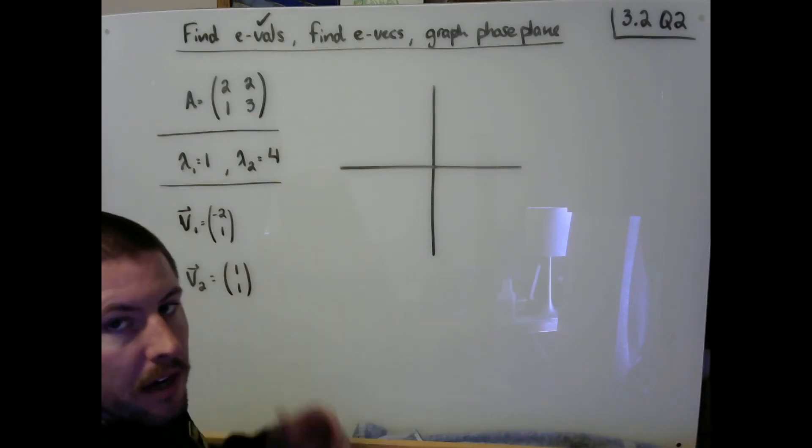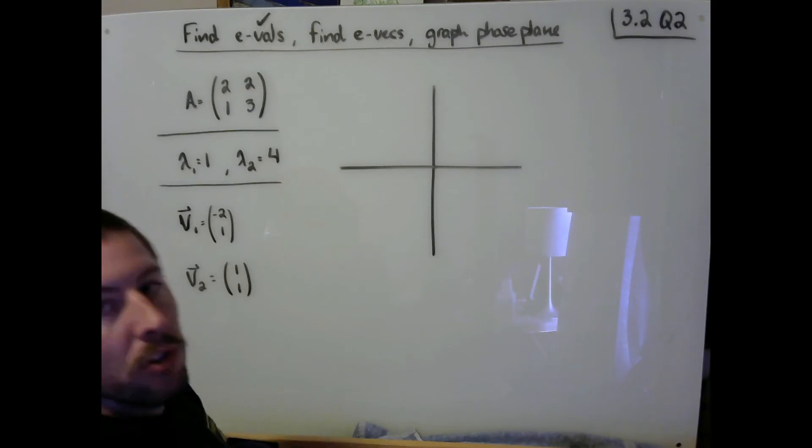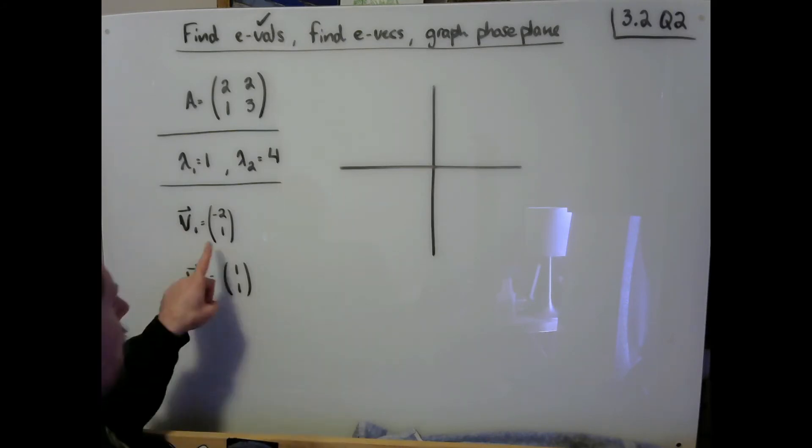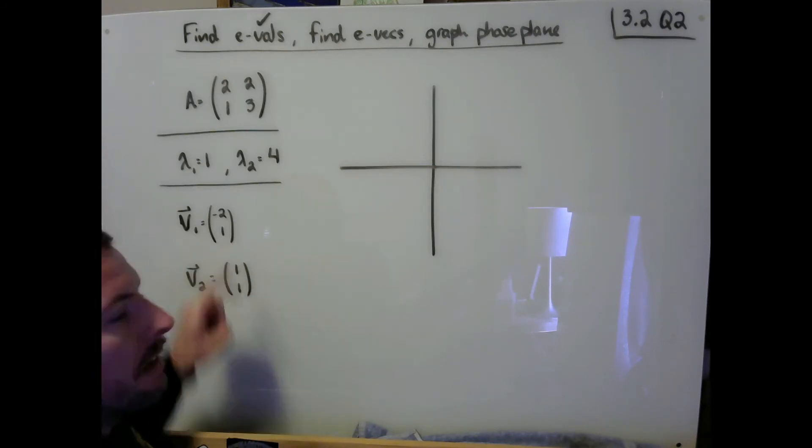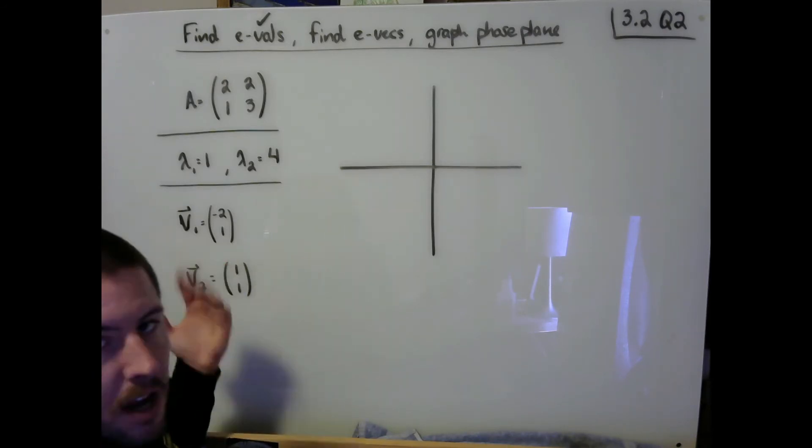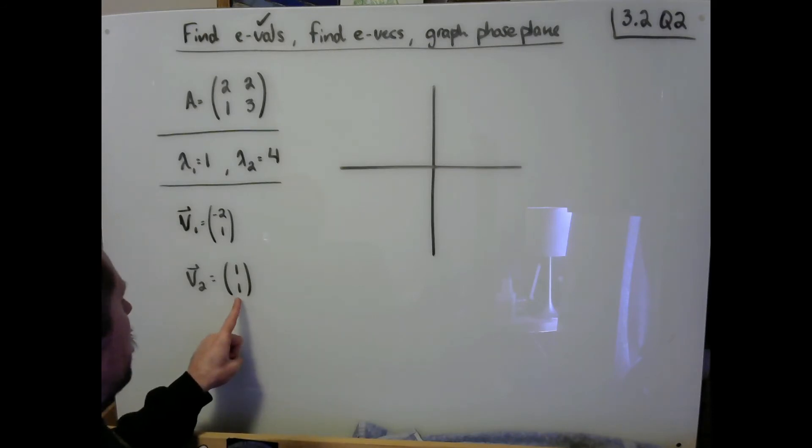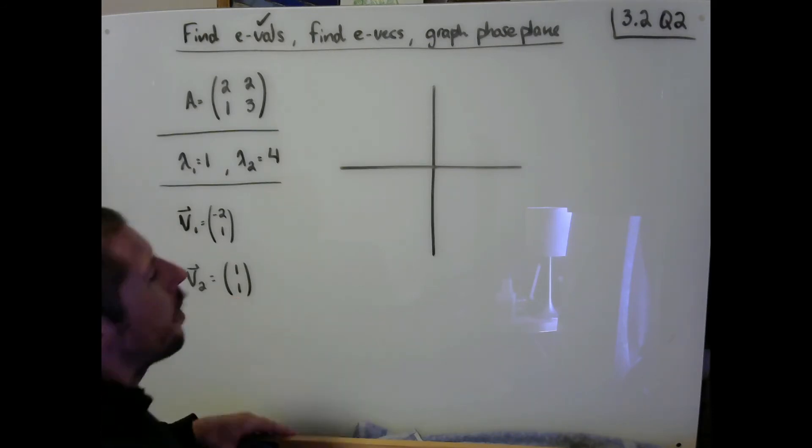Remember what we're even doing here. This section is entitled straight line solutions for a reason. What we're hunting for is where are these straight line solutions, as opposed to all the curvy trajectories that are within our phase plane. Particularly the eigenvectors are telling us where they are located. The eigenvalues are telling us what behavior will we experience along those straight line trajectories. So I'm going to draw my easy one first. V2 is the vector 1, 1.